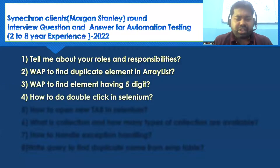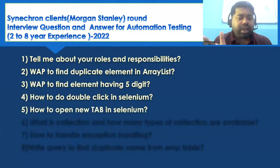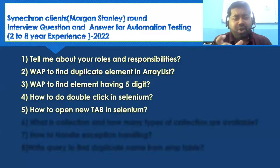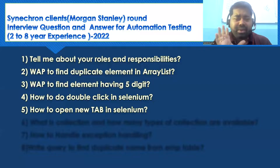The third question is: how to do a double click in Selenium? By using the Actions class, we have a double-click method. For right-click, we use the context click method from the Actions class. Sorry for the earlier confusion — context click performs right-click, and double click has its own dedicated method. Please confirm with Google as well.